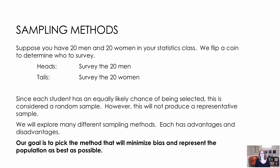Suppose we have 20 men and 20 women in the statistics course, and we flip a coin to determine who to survey. Heads, we survey all of the men; tails, we survey all of the women. Since each student technically has an equal chance of being selected, this is considered a random sample, which is what we want. However, if we talk to only men or only women, we might not get a sample that is representative of the whole.